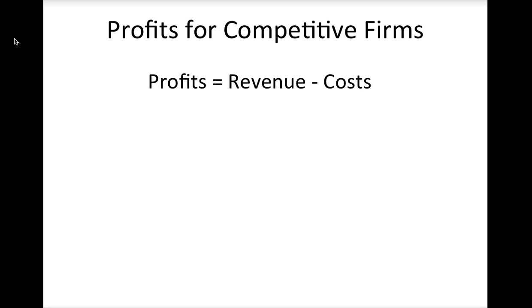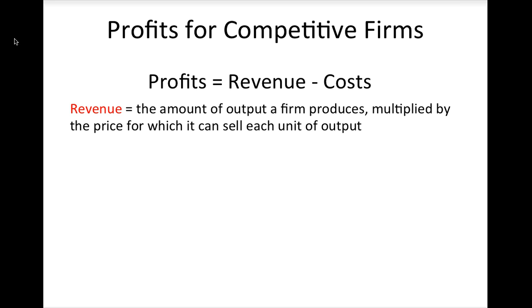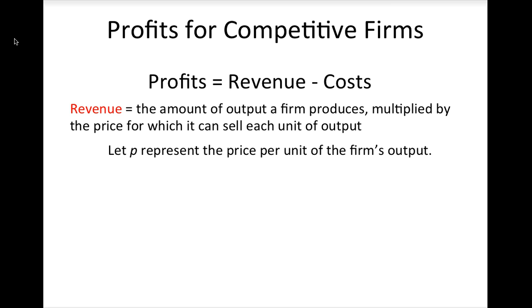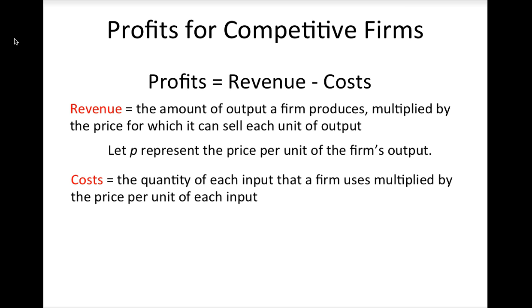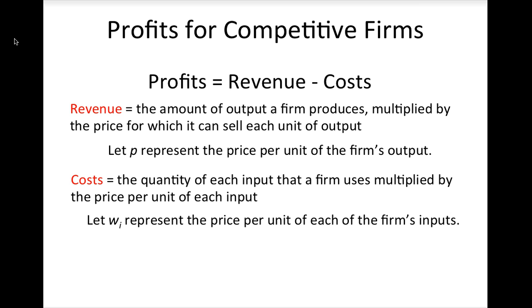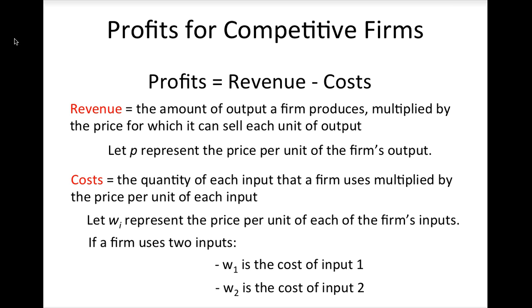As noted earlier, a firm's profit equals its revenues minus its costs. A firm's revenue equals the amount of output that it produces multiplied by the price for which it can sell each unit of output. We will let the letter P represent the price for which the firm can sell each unit of output. Similarly, a firm's costs are the quantity of each input that a firm uses multiplied by the price per unit of each input. We will let the letter W with a subscript represent the cost of each input. For example, if a firm uses two inputs, W1 represents the cost of input 1 and W2 represents the cost of input 2.